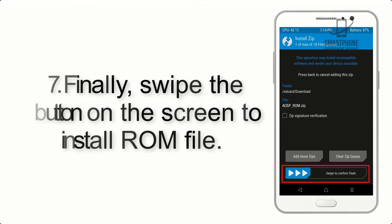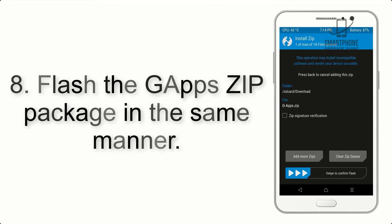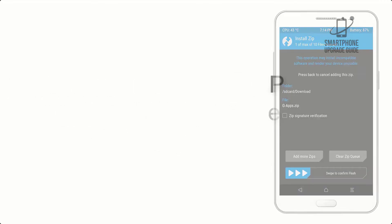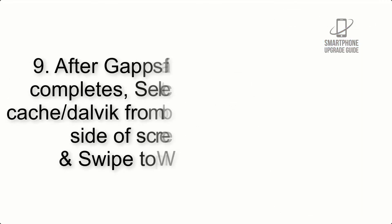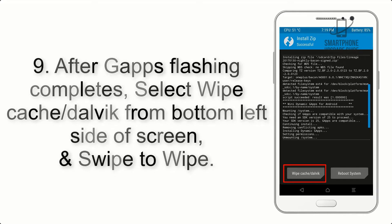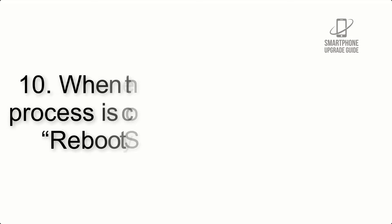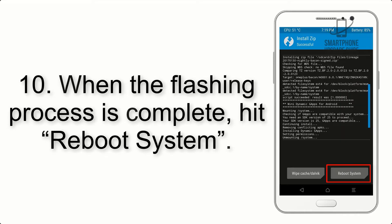Step 7: Swipe the button on the screen to install the ROM file. Step 8: Flash the GApps zip package in the same manner. Step 9: After GApps flashing completes, select Wipe Cache and Dalvik from the bottom left side of the screen and swipe to wipe.